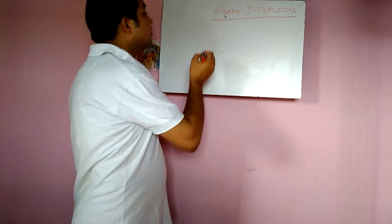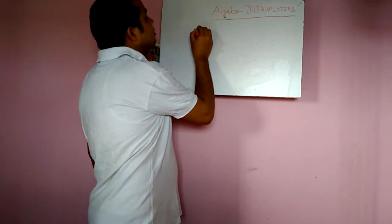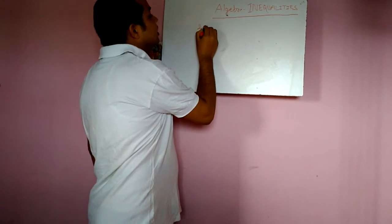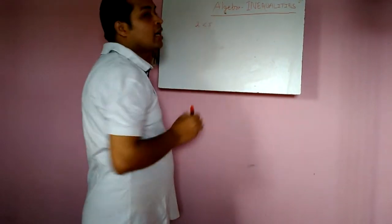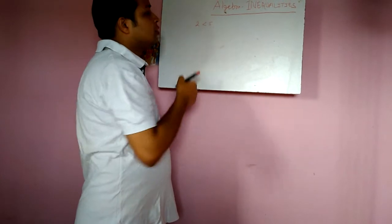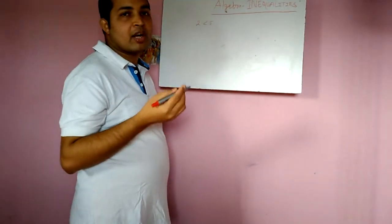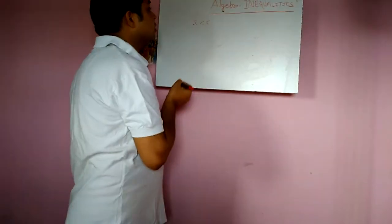To understand this inequality we will take an example of number. 2 is less than 5, and then we will apply all the operations: addition, subtraction, multiplication and division.